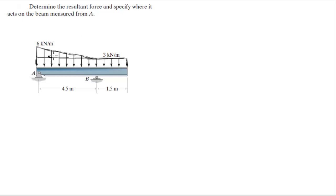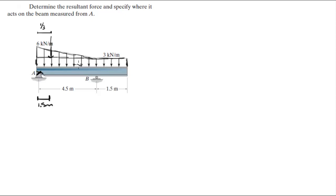The equivalent force of a triangular distributed load acts one-third from the big edge. That'll be one-third of 4.5, measuring from A — one-third of 4.5 is equal to 1.5 meters. Then we have the rectangular force; the equivalent force of a rectangular distributed load acts right in the middle.